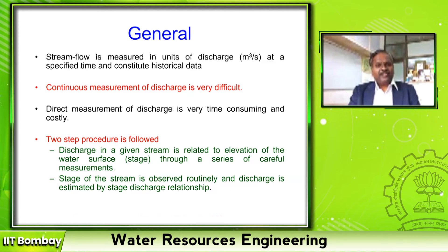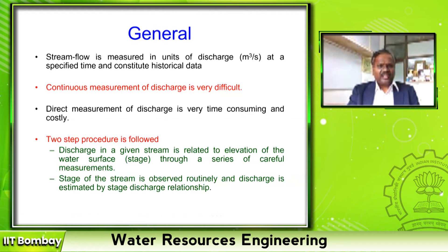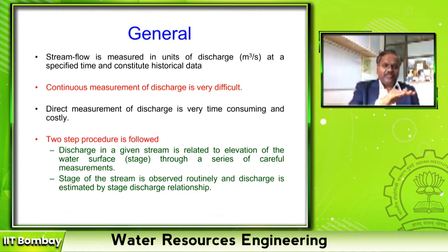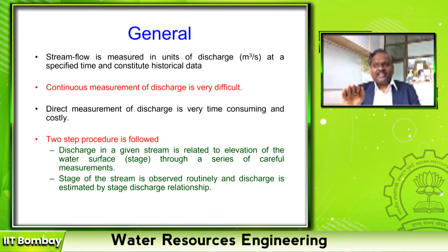In general, stream flow is measured in cubic meters per second, but we can also express this runoff in rainfall units — in centimeters. It is also not possible to continuously measure the discharge. What we do is carry out discharge measurement programs when the flow in the river is stabilized. When the water level is rising or falling, we should not do the measurement, because while measuring velocity and cross-sectional area, the water level should not vary.